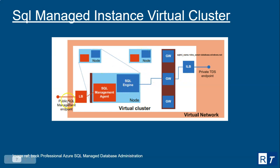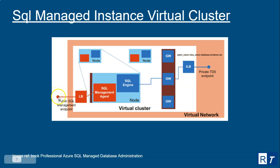There is also a public endpoint with its own load balancer. The difference is that this is a public load balancer because it has a public IP associated with it, whereas the private load balancer has no public IP — it is an internal load balancer. Azure management services connect to this public endpoint to perform management workloads.